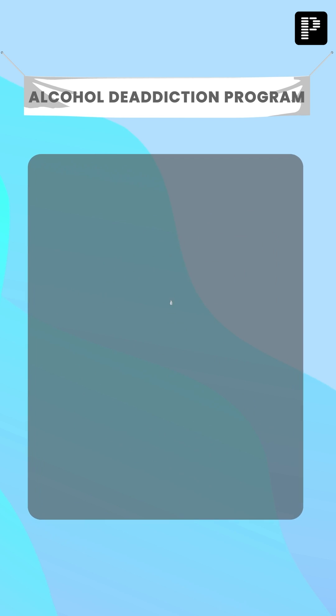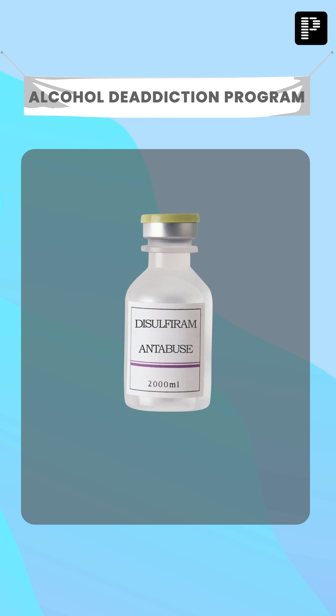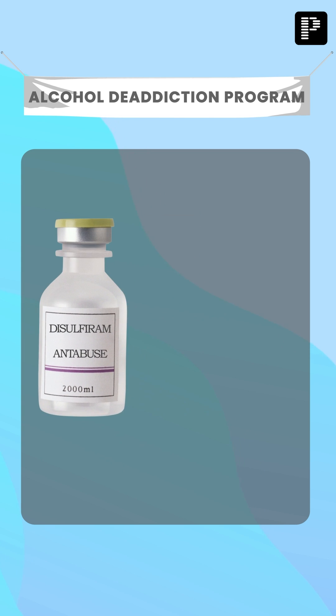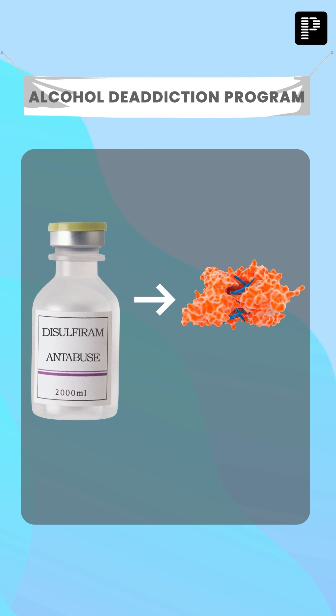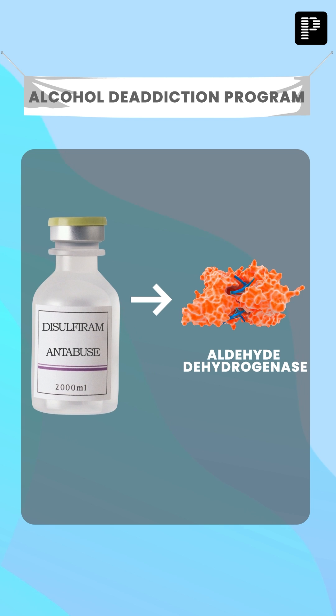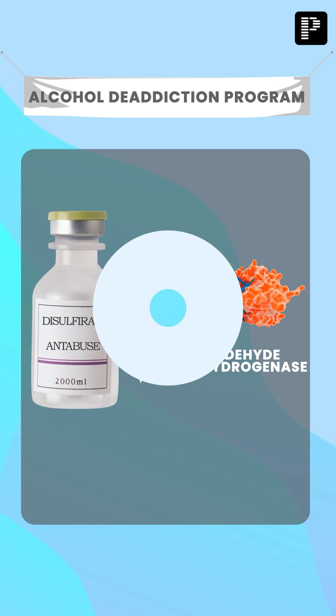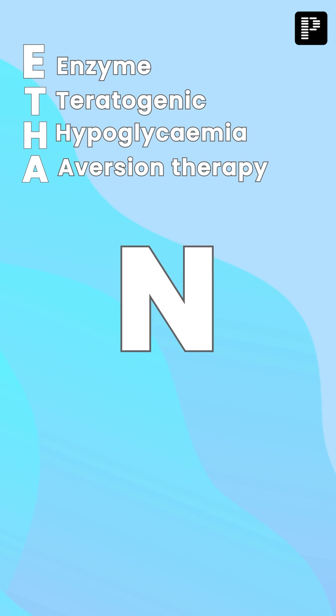The next letter is A — A stands for aversion therapy. Whenever we are doing an alcohol de-addiction program, we use aversion therapy. The drug used is disulfiram, also known as Antabuse. It inhibits an enzyme called aldehyde dehydrogenase, and this inhibition is irreversible.